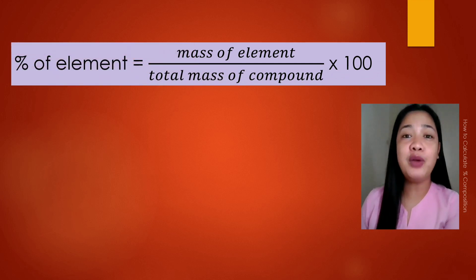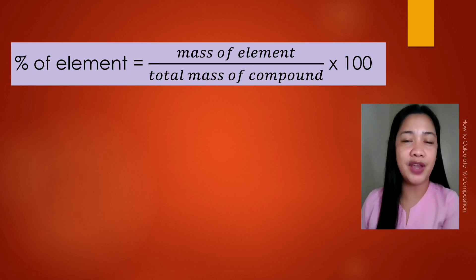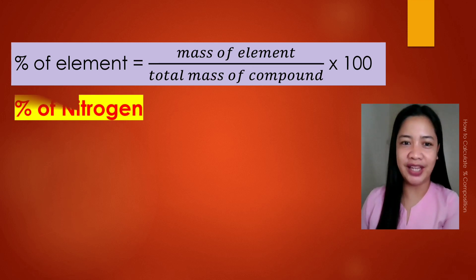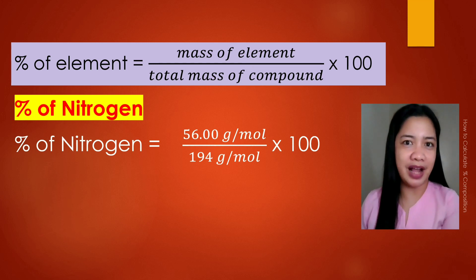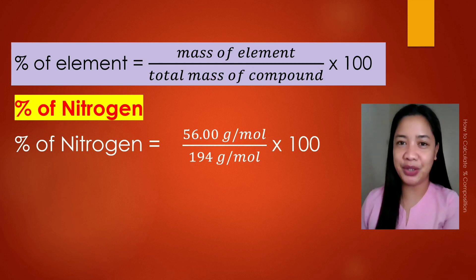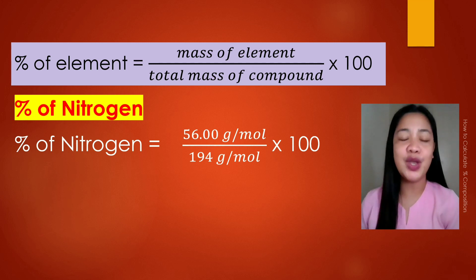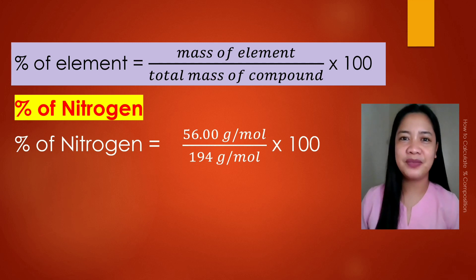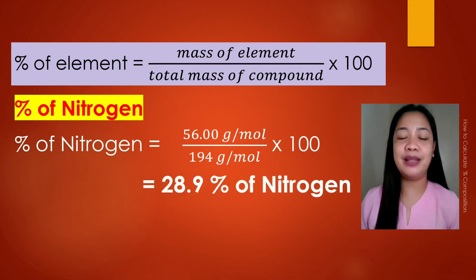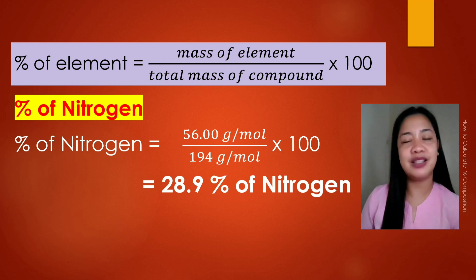We are going to solve the percent by mass of nitrogen using this formula. The formula is: percent of element is equal to mass of element divided by the total mass of a compound times 100. For our given, we are going to use percent of nitrogen and simply substitute the values. Percent of nitrogen is equal to 56.00 grams per mole divided by 194 grams per mole times 100. Using your scientific calculator, the final answer is 28.9 percent nitrogen. Therefore, 28.9 percent of nitrogen is present in the compound.